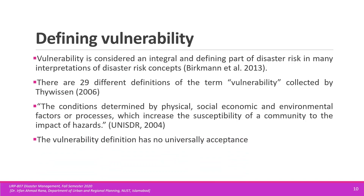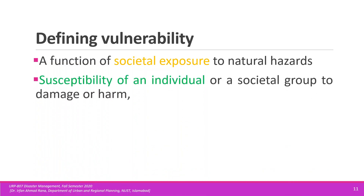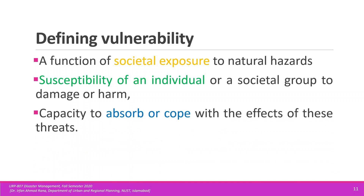It has been observed in the literature that vulnerability is not universally acceptable because of its multifaceted or multidimensional nature. It is very difficult to conceptualize without a proper understanding of different natural hazards or the different contexts in which we are studying vulnerability. We can define it as a function of societal exposure to natural hazards, susceptibility or sensitivity — sometimes referred to as fragility — and the inability or lack of capacity to absorb or cope with the effects of a disaster. Including these three aspects — exposure, sensitivity, and capacity — we can determine vulnerability.